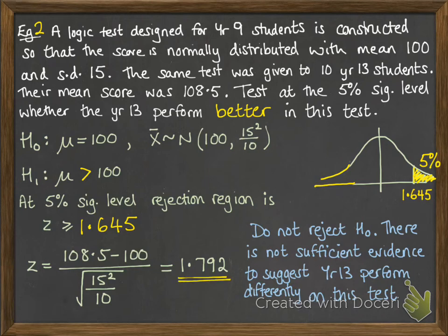If we calculate the z value again, that's not going to change. It's still 1.792 for our mean score of 108.5. But the test has changed a little. So now we will reject the null hypothesis because 1.792 is bigger than 1.645.